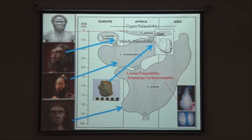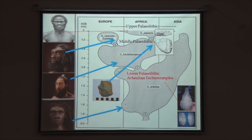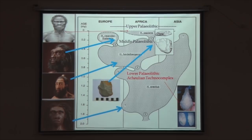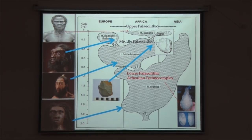This is an example of evolved Levallois technology, where development emphasized producing smaller flakes and modifying them into various types of stone tools: scrapers, borers, notches, points, and so forth. Further up in time, we see microliths and composite tools coming into use, with large game hunting becoming a common subsistence mode for these communities.